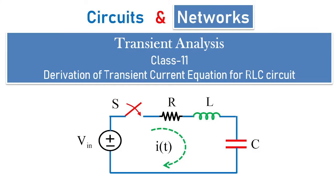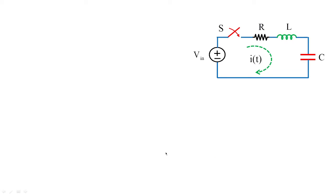Hi, welcome to another session of circuits and networks. In today's transient analysis class we are going to see the derivation of the transient current equation for an RLC circuit. Here you can see we have DC connected to RLC. In our previous classes we have seen the initial conditions — the initial behavior of inductor and capacitor when the switch is closed, taking t = 0⁺ as the immediate condition and t = 0⁻ as before the switch is closed. In this class we are going to see the derivation of transient current.